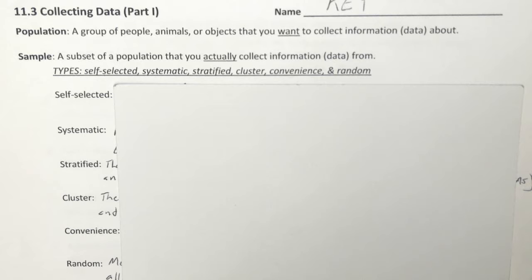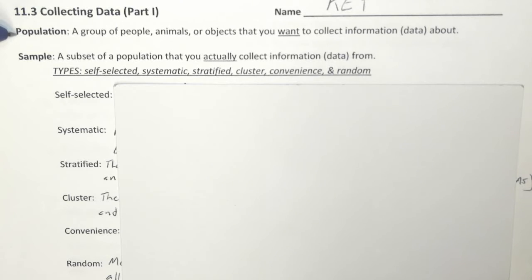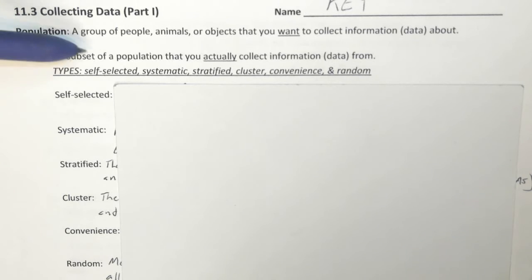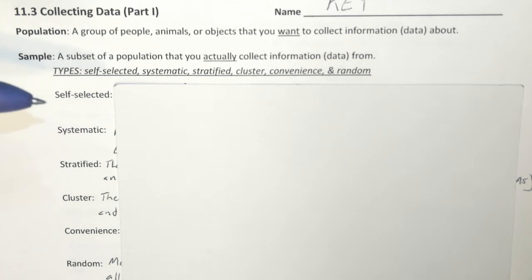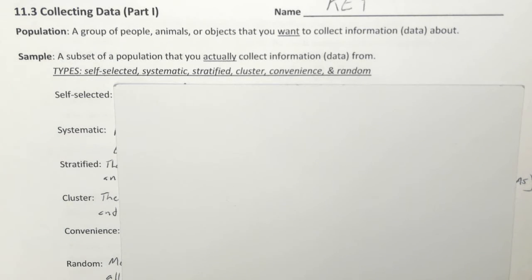In Section 11.2, we had talked about the difference between population and sample. We discussed how population is usually challenging to collect because populations are so big, and samples are a little bit more easy to work with. A sample is, once again, a subset of a population that you can actually collect information from, so this is going to be a little bit easier for you to do.